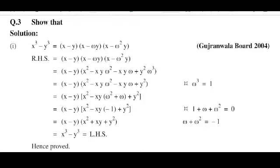So x minus y into x square minus xy omega square minus xy omega plus y square, so omega cube is equal to 1.